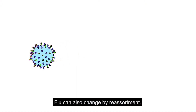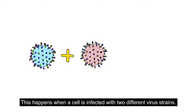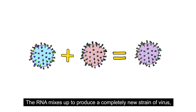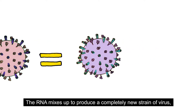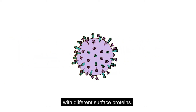Flu can also change by reassortment. This happens when a cell is infected with two different virus strains. The RNA mixes up to produce a completely new strain of virus with different surface proteins.